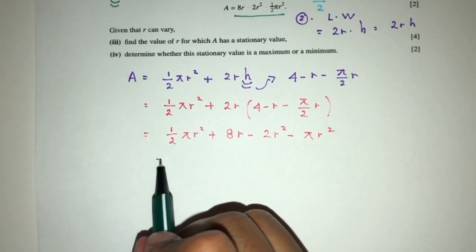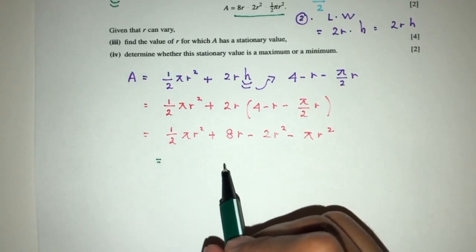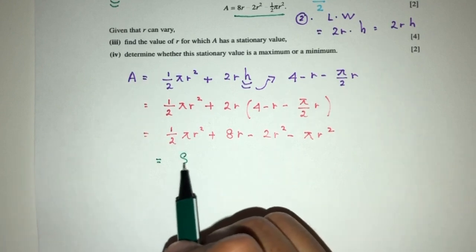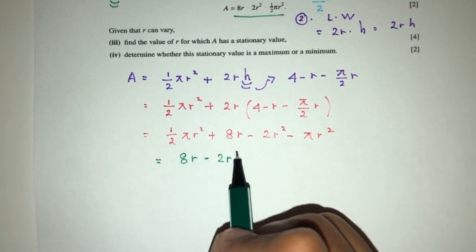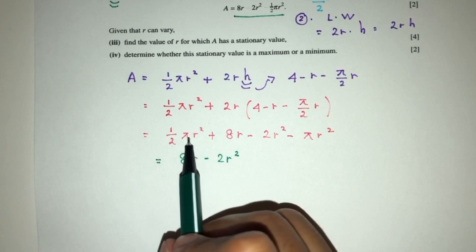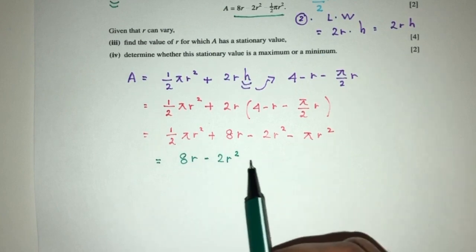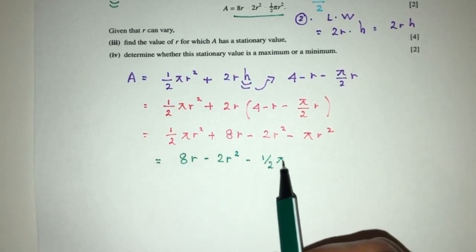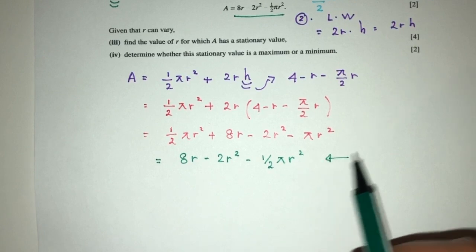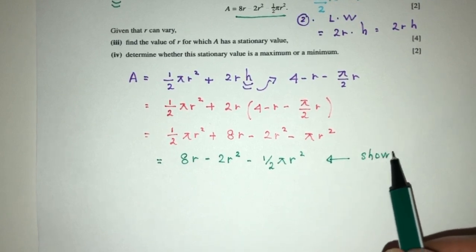Now, what else? So, let's see, what else can we do here? So we have 8r minus 2r². And here, we have plus half πr² minus πr². That should be minus half πr². And this is shown as required for question, part 2.